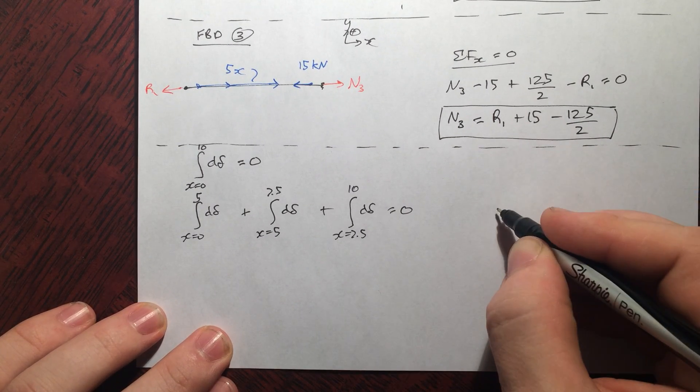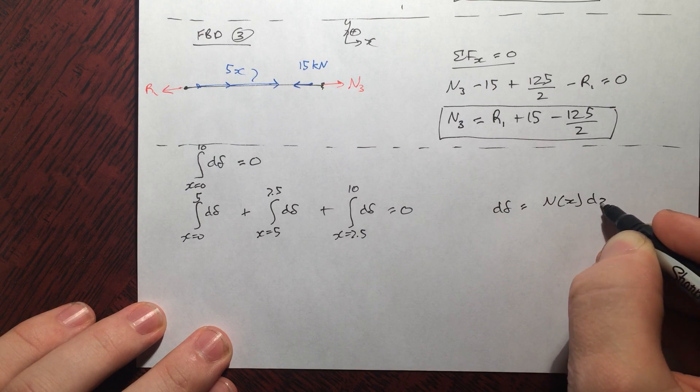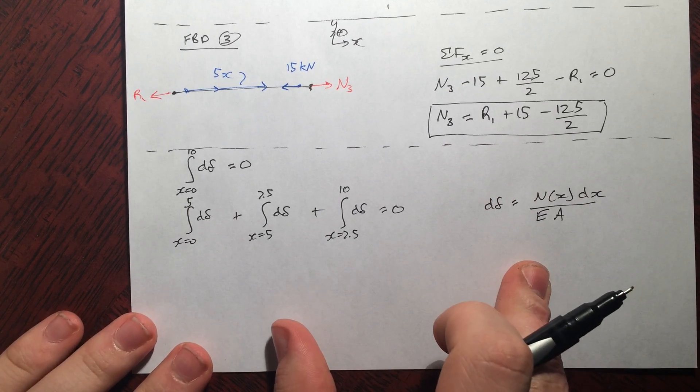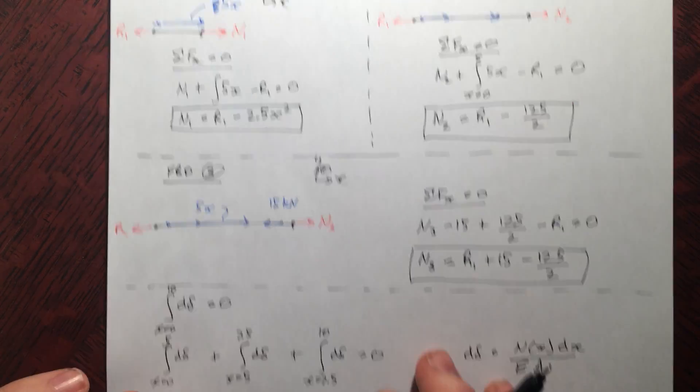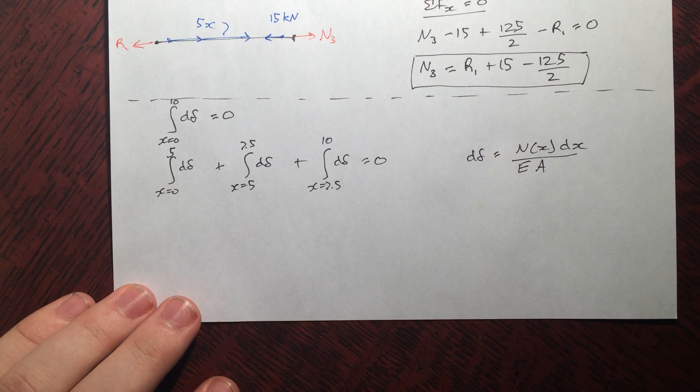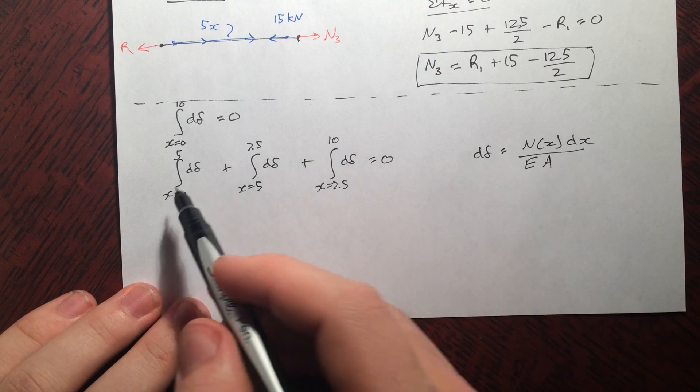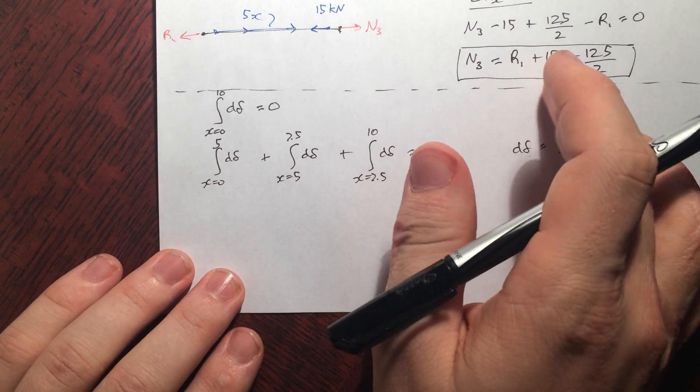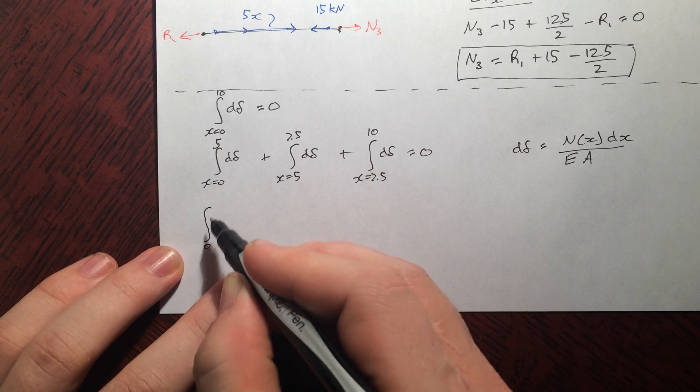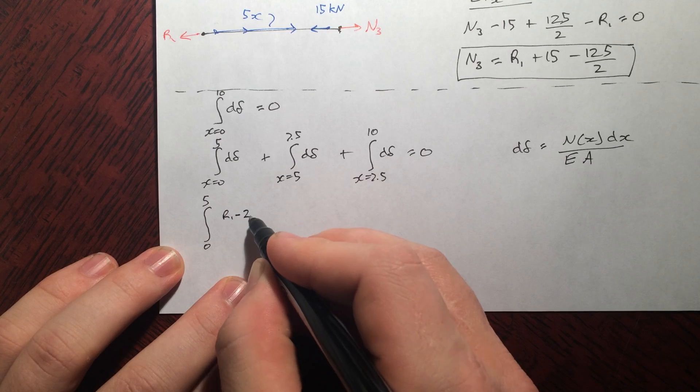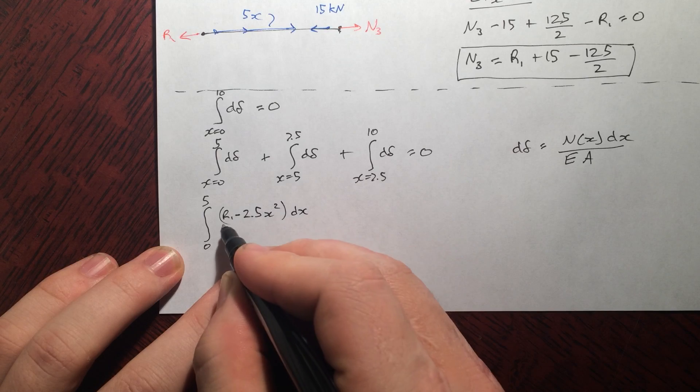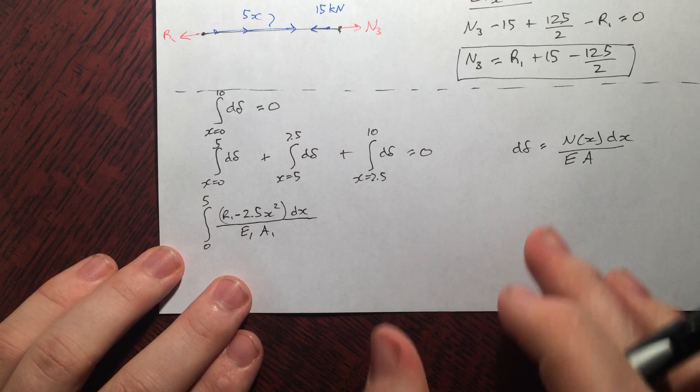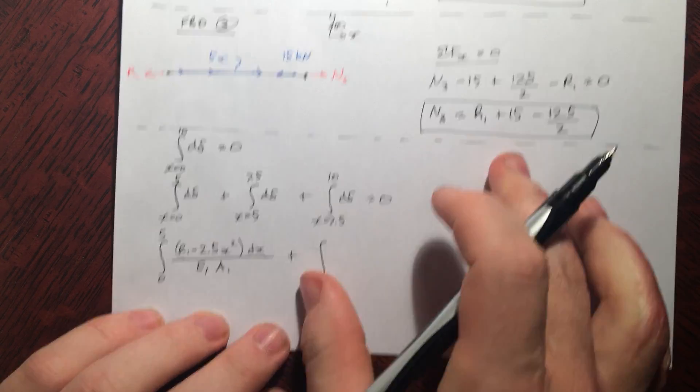Now we know that d delta is N as a function of x dx over EA. And these are both technically functions of x too, if you want to complete this equation. But in this question here, our E and our A are constant, so I'm going to leave that out. Now we've plugged those all in there, but I'm just going to skip one step ahead and say, for this piece here, that's just going to be N1, right, between 0 and 5. I'm going to go ahead and plug N1 straight away into our equation.